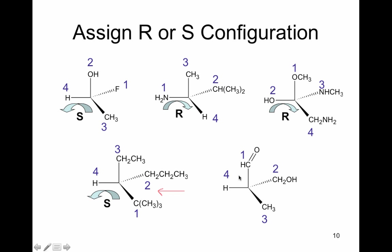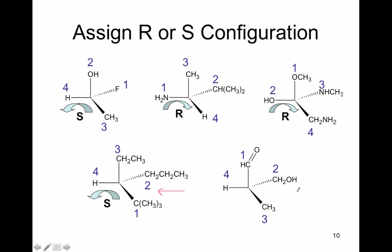In the fourth example, the lowest priority goes to the left, so I look from that direction. One is to the left, two is to the right, and three is up. That gives counterclockwise motion with the lowest priority away from me — so this is S. In the last example, with the lowest priority in that direction, one is on top, two is to the right, three is here — going clockwise, so this is R.